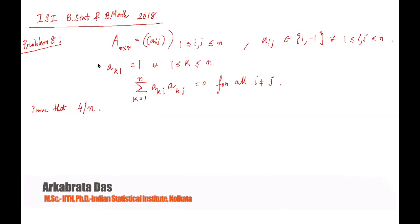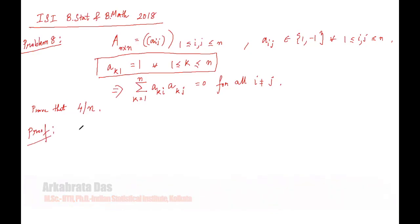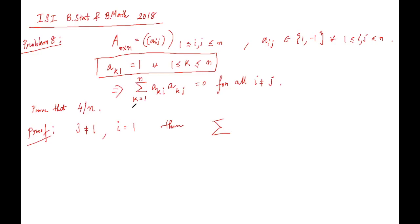Since the entries of the first column are all one, let's apply the orthogonality condition. If we take j not equal to one and i equal to one, then in the summation all the a_{k1} terms equal one, so the summation reduces to the sum of a_{kj} from k=1 to n equals zero. This implies that the sum of elements of the j-th column equals zero whenever j is not equal to one.